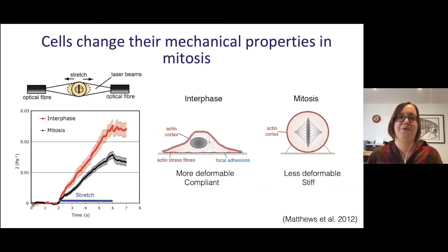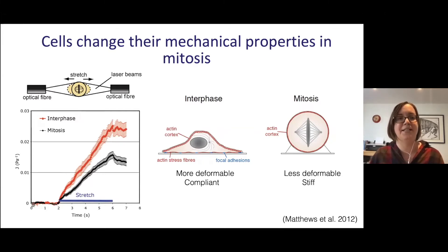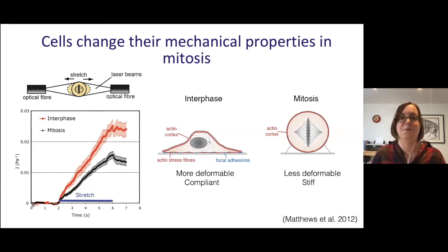We've known for some time that when cells divide, they not only change shape but also dramatically change their mechanical properties. This is illustrated by optical stretching experiments, where cells are caught in an optical trap, a stretching force is applied, and deformation is measured. Interphase HeLa cells, plotted in red, are much more deformable than mitotic cells shown in black. By various mechanical measurements — atomic force microscopy or real-time deformation cytometry — we consistently find that interphase cells are much softer and more deformable, whereas mitotic cells are very stiff.